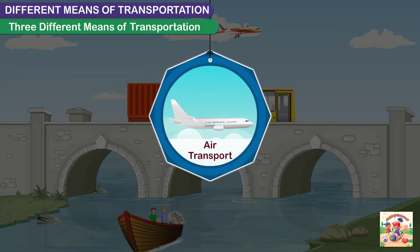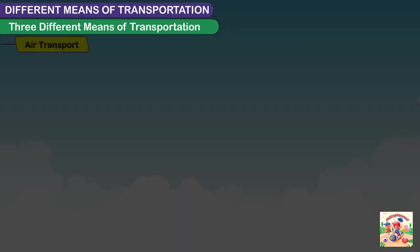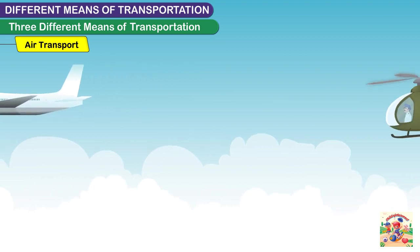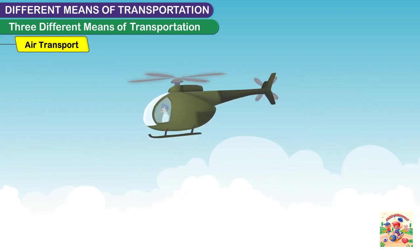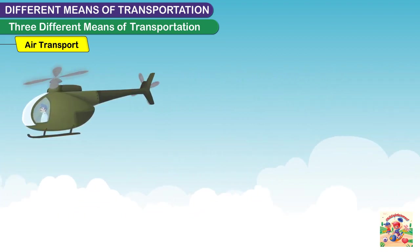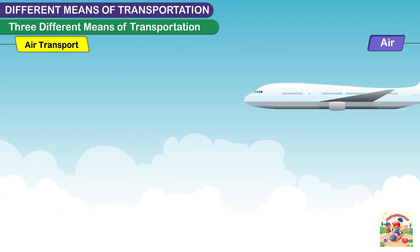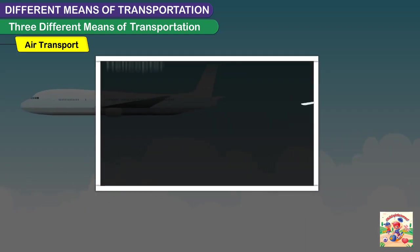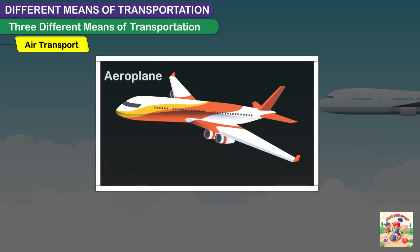Air transport is the fastest means of transport and includes vehicles that travel in air. For example, helicopter, aeroplane, hot air balloon, etc.